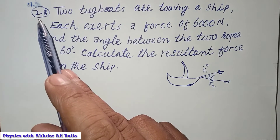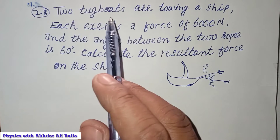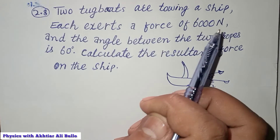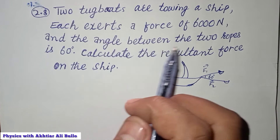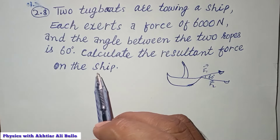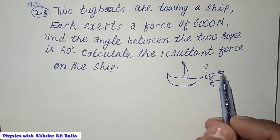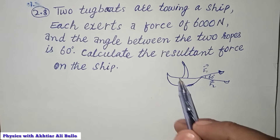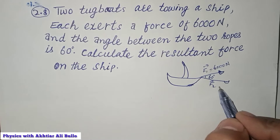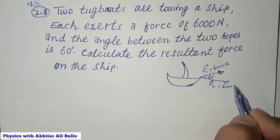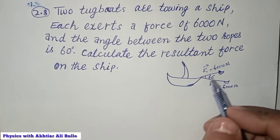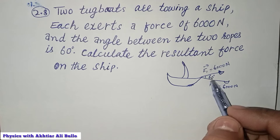Numerical problem 2.8: Two tugboats are towing a ship. Each exerts a force of 6000 Newtons and the angle between the two ropes is 60 degrees. We need to calculate the resultant force on the ship. The tugboats apply equal forces: F1 is 6000 Newtons and F2 is 6000 Newtons, and the ropes make an angle of 60 degrees.